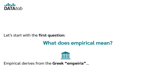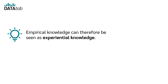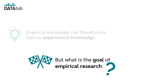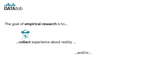Empirical derives from the Greek 'Empyria' and means experience or observation. Empirical knowledge can therefore be seen as experimental knowledge. But what is the goal of empirical research?